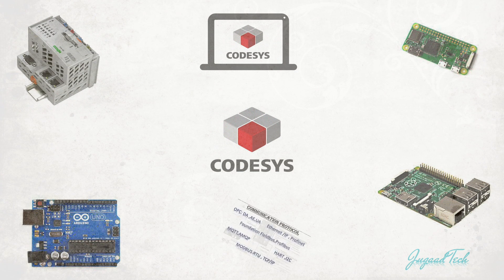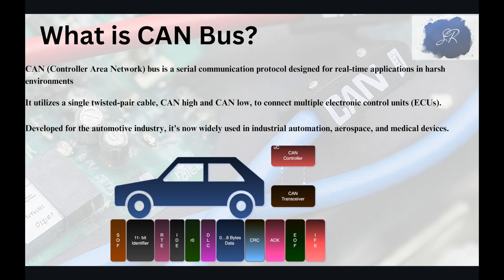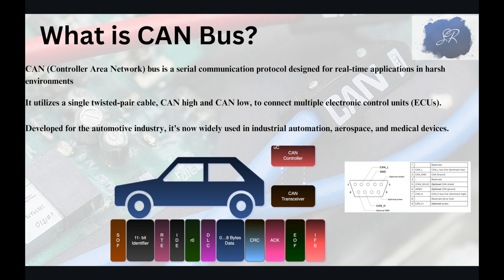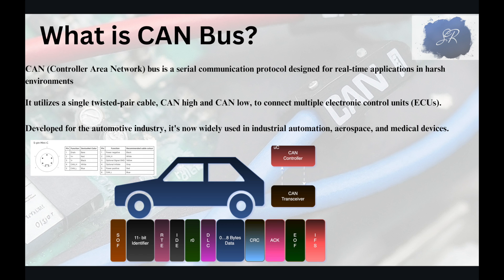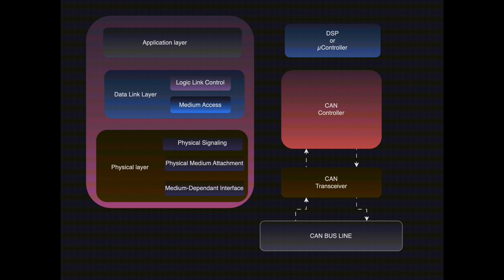CAN is basically defined as Controller Area Network. It is a serial communication protocol which was designed for real-time applications. It utilizes a twisted pair cable which has CAN High and CAN Low as main components, and then it is utilized to connect with multiple control units. It was mostly utilized for automotive industries but now it is getting adapted in industrial automation, medical devices, and other spaces also.